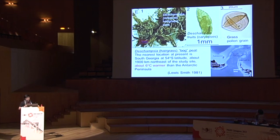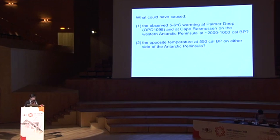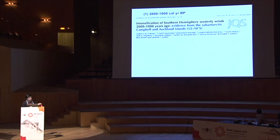The new results are quite similar to the Palmer Deep sea surface temperature record. The question is: what caused that change, especially the difference between the East and West Antarctic Peninsula? There is a claim that the westerlies intensified from 2,000 to 1,000 years ago, and that maybe the observed pattern has something to do with that.